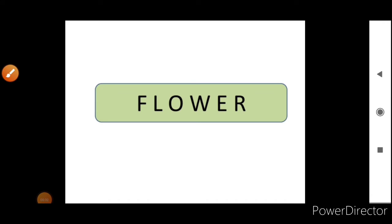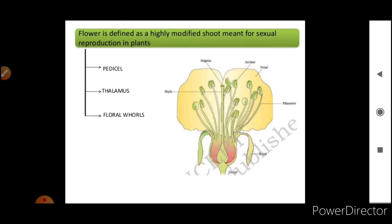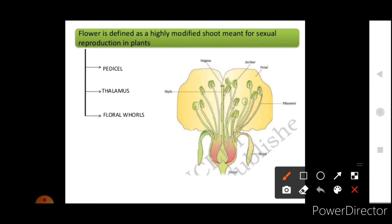We start with the topic flower. Flower is defined as a highly modified shoot meant for sexual reproduction in plants. The main parts of the flower are the pedicel, thalamus, and floral whorls. Pedicel is the stalk, thalamus is the base, and calyx, corolla, androecium, and gynoecium are all the floral whorls.